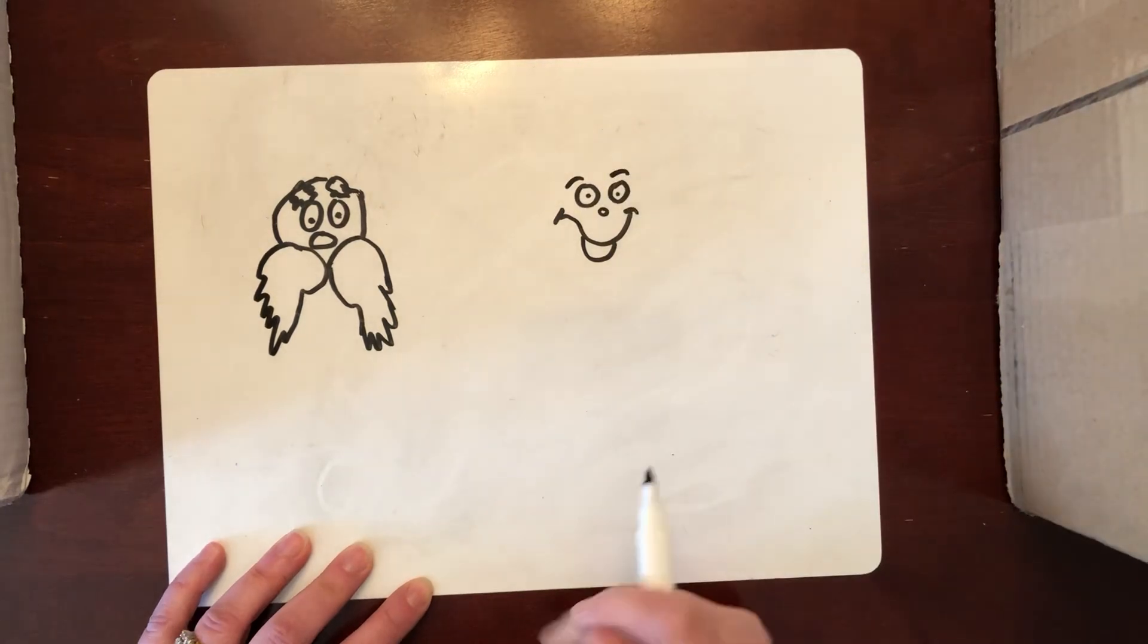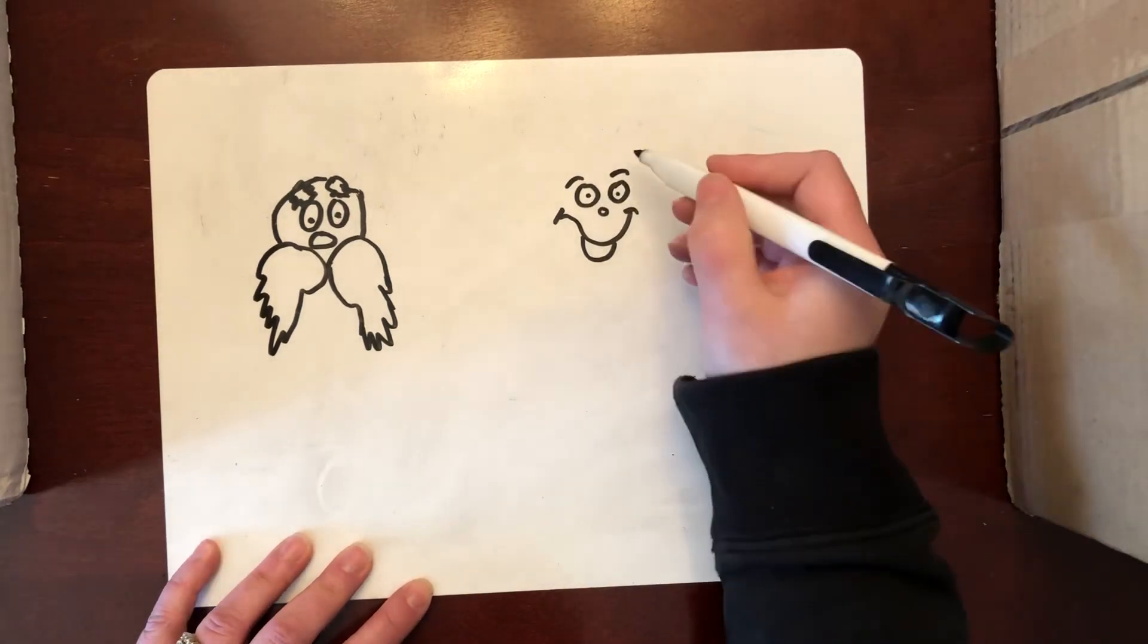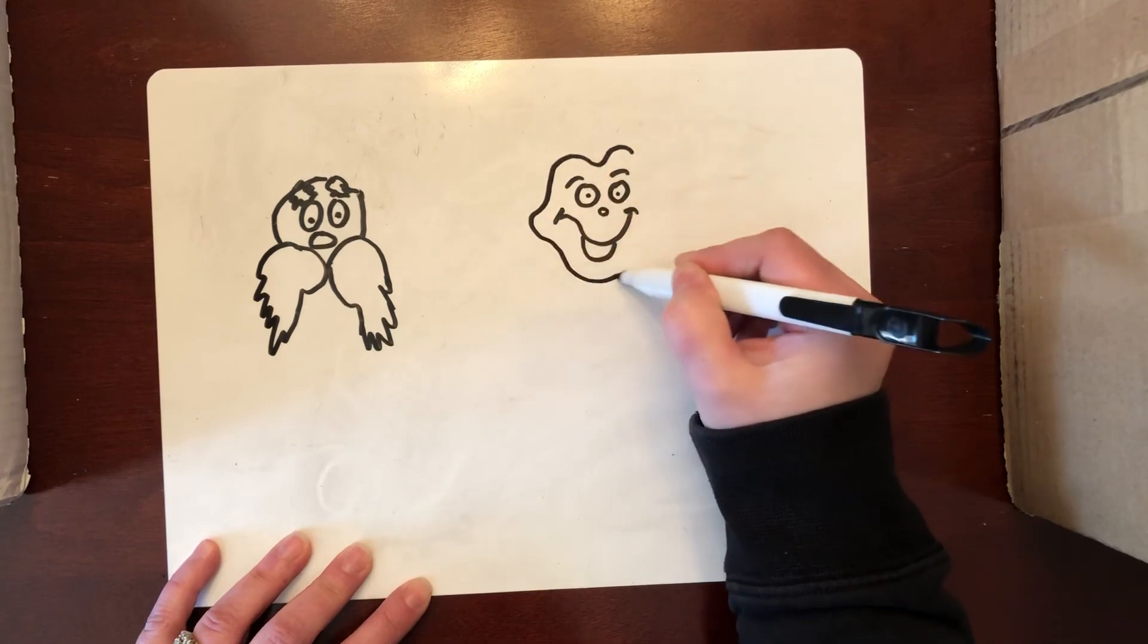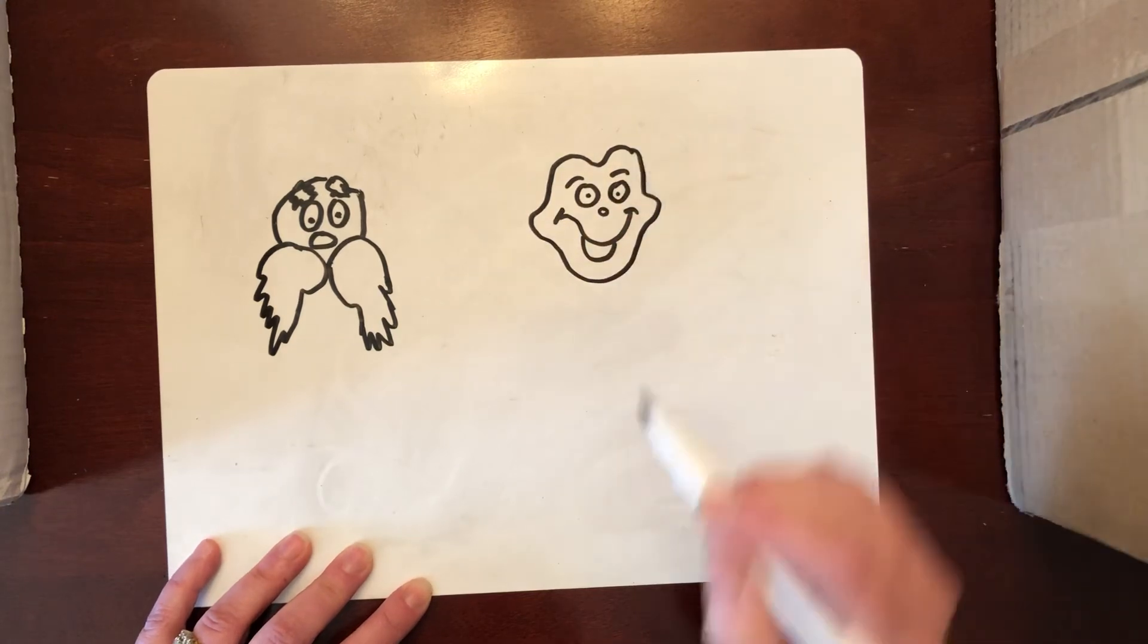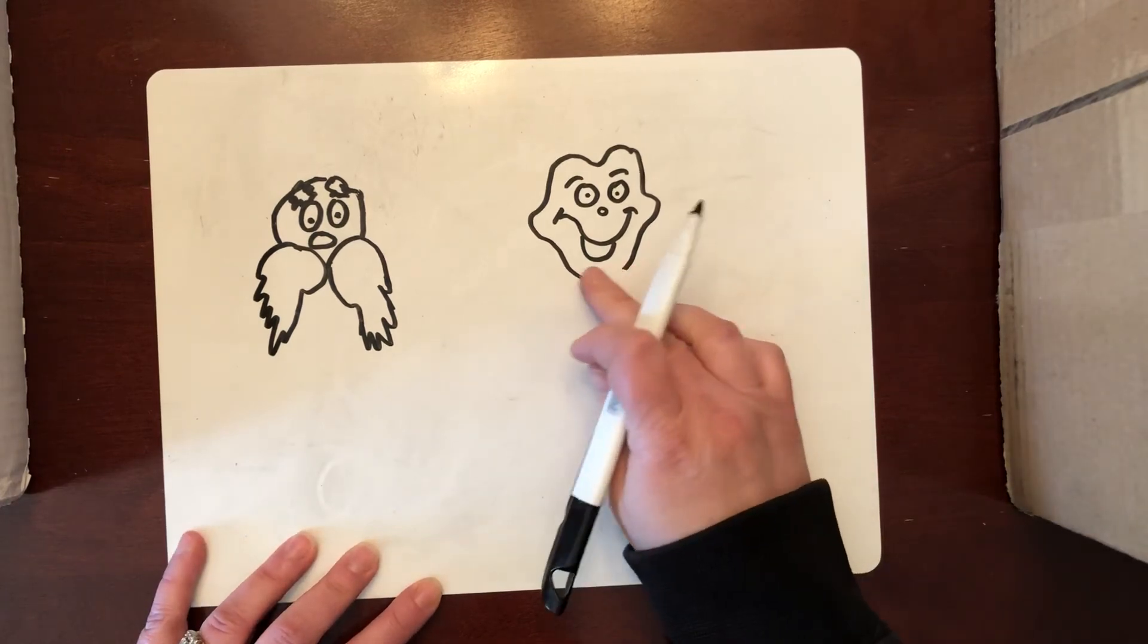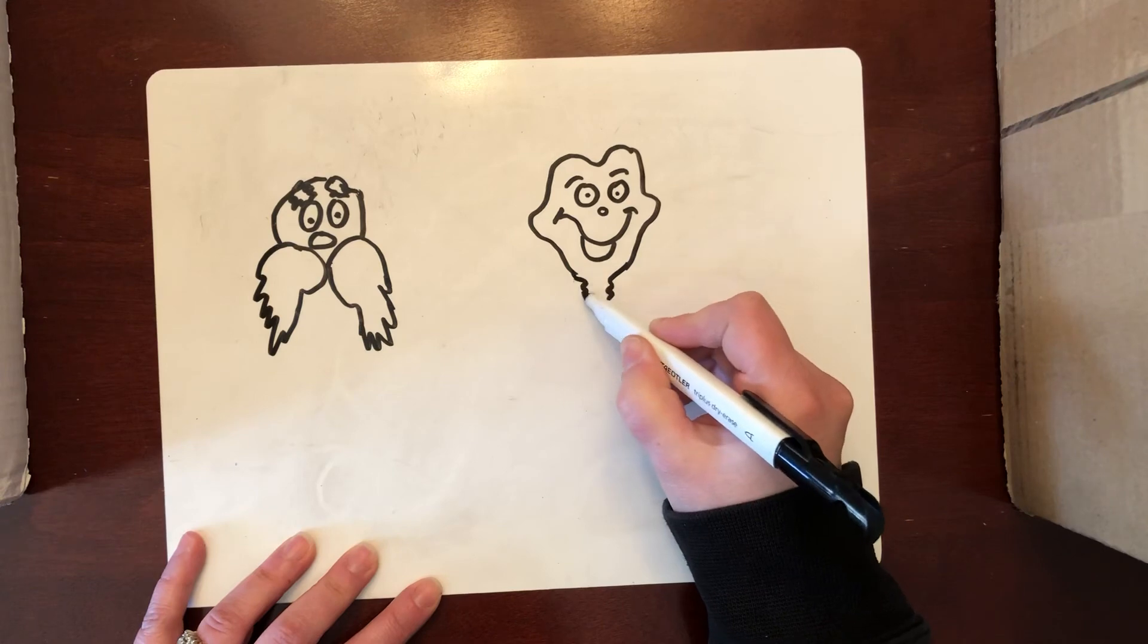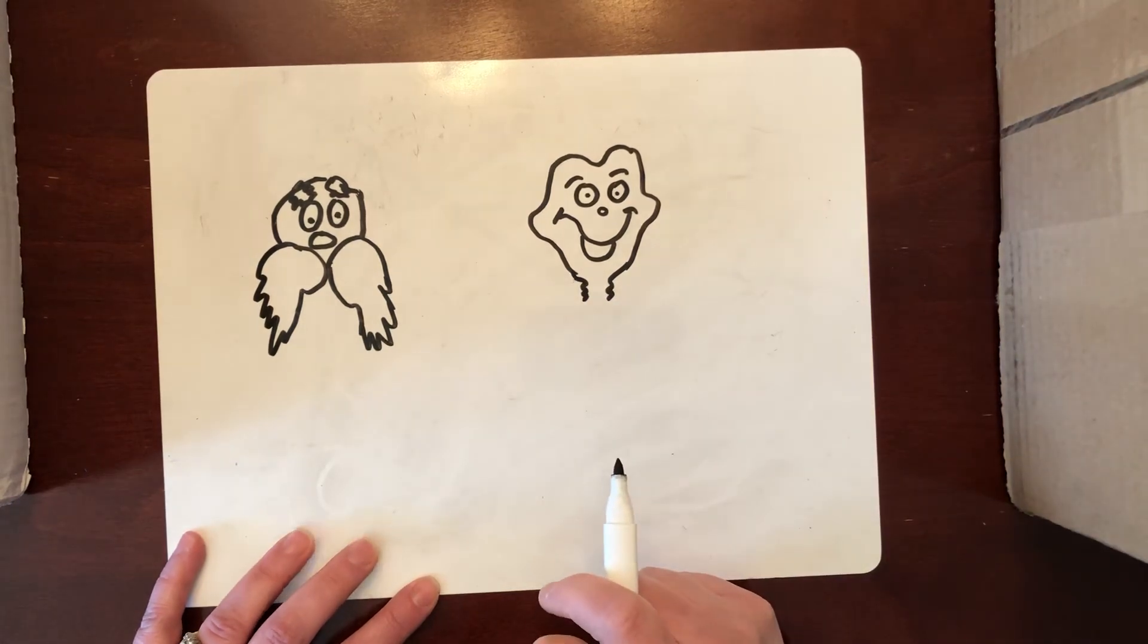I'm also going to give it some eyebrows and then I'm going to create the shape and you can create the shape of the face any way you'd like. This is kind of what makes it interesting. I'm going to put his neck on here too. All of them will be a little bit different.